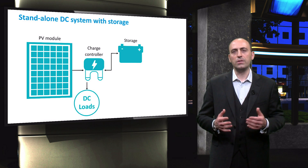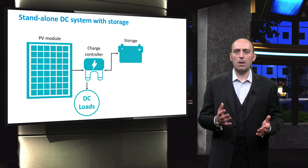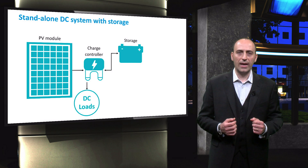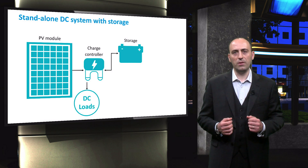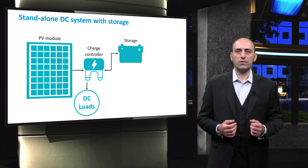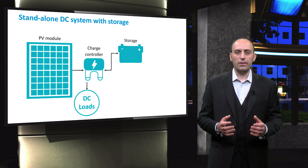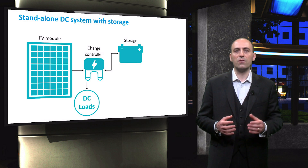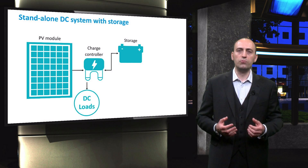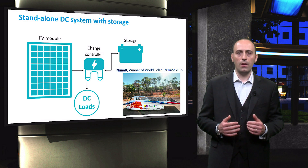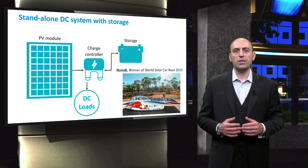Then we have DC systems with storage, with a somewhat more complicated topology. The charge controller is connected on one end with the storage unit and at the other end with the PV modules. When batteries are implemented as a storage system, a charge controller is required. It has the task to disconnect the batteries from the PV modules when the batteries are fully charged, and may disconnect the load to prevent batteries from being discharged below a certain limit. A DC system with storage is widely used to charge smartphone batteries with solar energy.